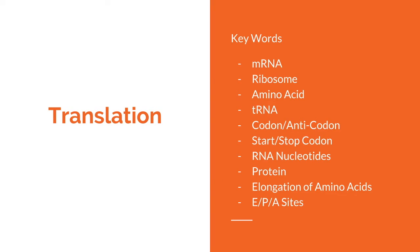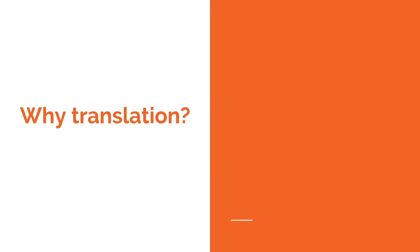Translation. Some key terms are messenger RNA or mRNA, ribosome, amino acids, transfer RNA or tRNA, codons, anticodons, start and stop codon, RNA nucleotides, protein, elongation of amino acids, and the E, P, and A sites.